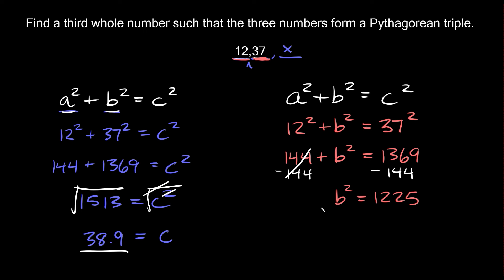To solve for b let's take the square root of both sides, these cancel out so we get that b = 35 and as you can tell 35 is obviously a whole number. So it looks like the three numbers that we should have up here are 12, 35, and 37.